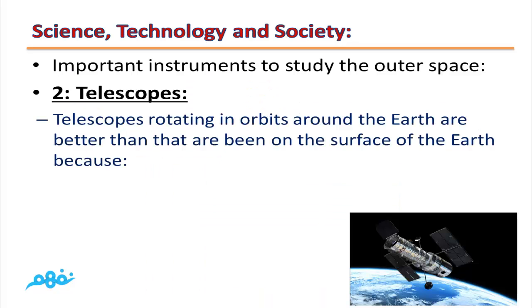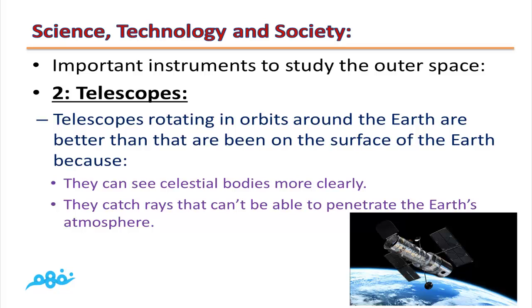Telescopes rotating in orbits around the Earth are better than that are being on the surface of the Earth because they can see celestial bodies more clearly. They catch rays that can't penetrate the Earth's atmosphere.